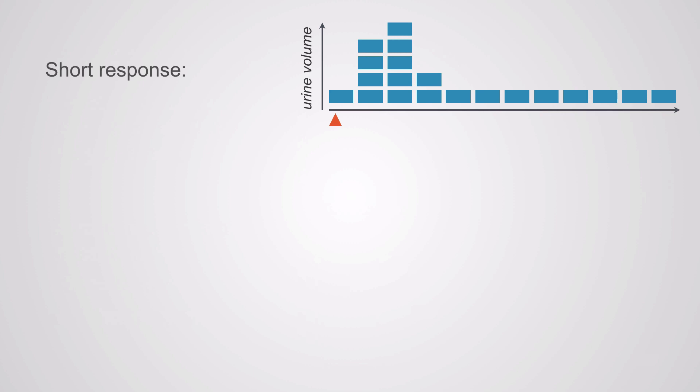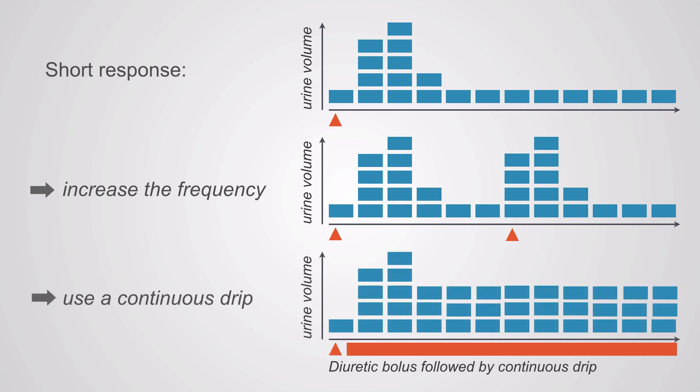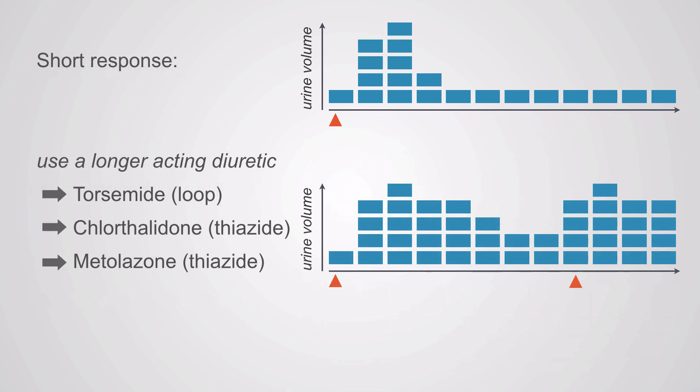If you have a short response, you want to increase the frequency that you give the drug, and that could overcome that short response. You can even use a continuous drip or switch your diuretic to a longer-acting diuretic to overcome this. This is typical of the diuretic failure we see in heart failure, liver failure, and nephrotic syndrome. Usually, increasing the frequency is your best bet there.